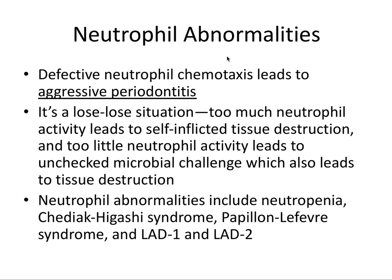Neutrophils can perform abnormally, and defective neutrophil chemotaxis can lead to aggressive periodontitis. We talked about certain bacteria that can cause aggressive periodontitis — that would be Aggregatibacter actinomycetemcomitans (AA bacteria), which causes the aggressive form of periodontitis. But a problem with the body's own immune response can also cause this form of periodontitis, so that's important to know.